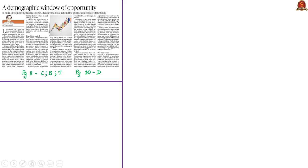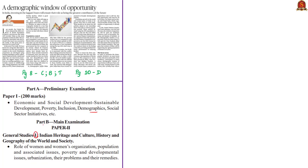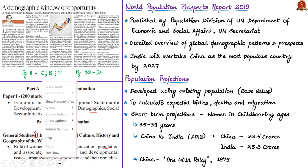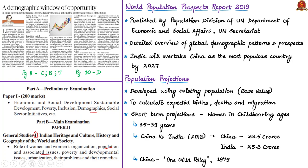Let us see an editorial about India's population and its associated issues. The analysis will be helpful in prelims preparation under economic and social development, particularly under demographics, and also relevant in mains preparation in General Studies Paper 1 under population and associated issues. The author starts the editorial with the World Population Prospects Report released last month. The World Population Prospects 2019 is published by the Population Division of the UN Department of Economic and Social Affairs, providing a detailed overview of global demographic patterns.